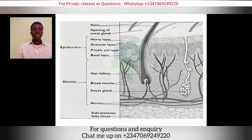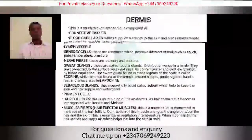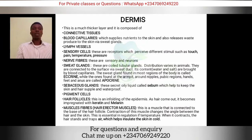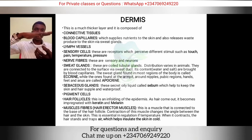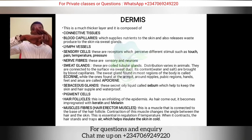Moving on to the dermis, which is the thicker layer below the epidermis. For examination purposes, you can pause the video here to study the diagram. The dermis is composed of connective tissue and blood capillaries, which supply nutrients to the skin and release waste products via sweat glands. The blood capillary is close to the sweat gland — it secretes fluid into the sweat gland, which then releases it through the sweat duct. The dermis also contains lymphatic vessels.